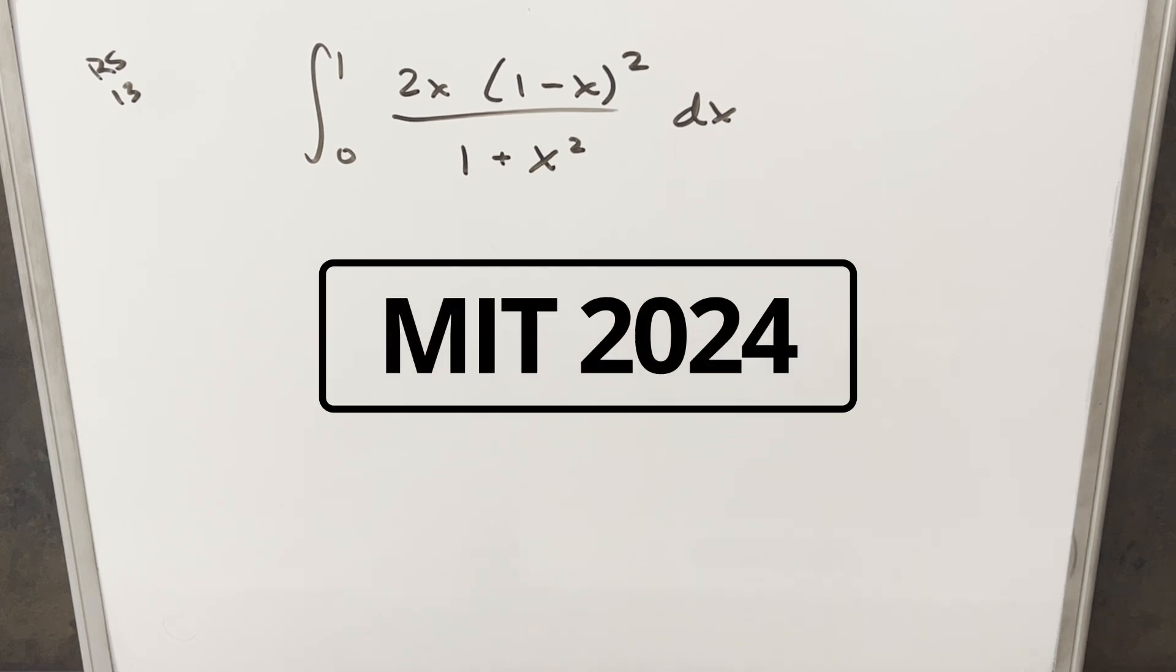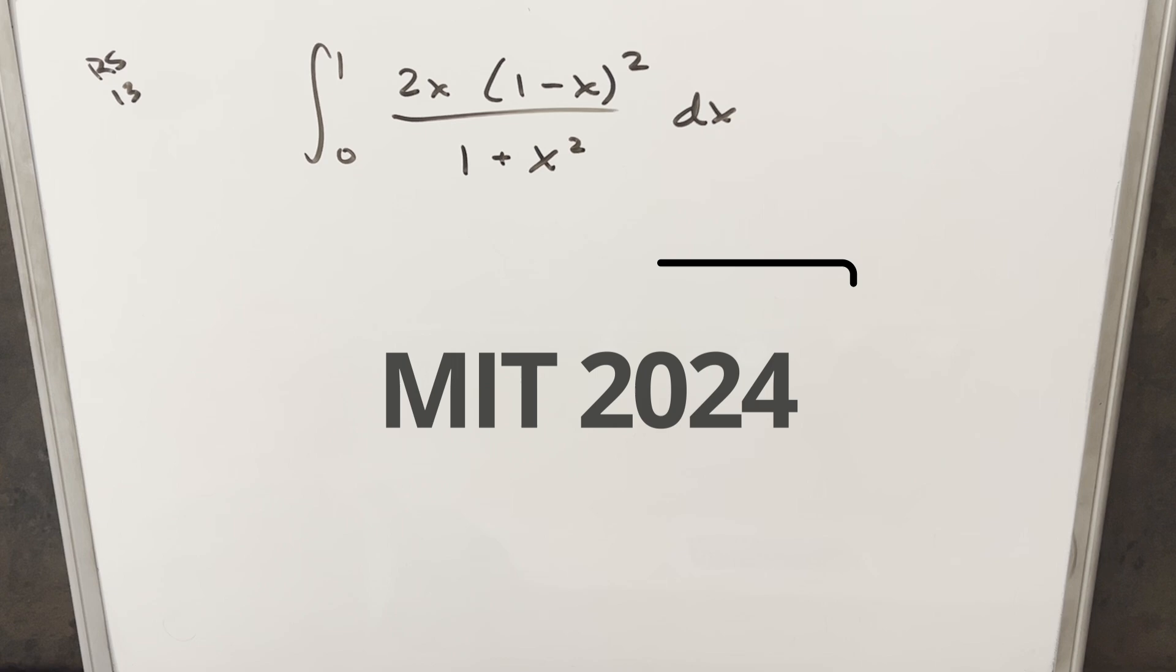Okay, we have an interesting integral from the MIT Integration Bee 2024. This was regular season number 13. We have the integral from 0 to 1 of 2x times (1-x)² over 1+x² dx.